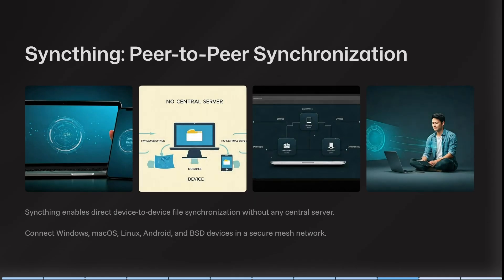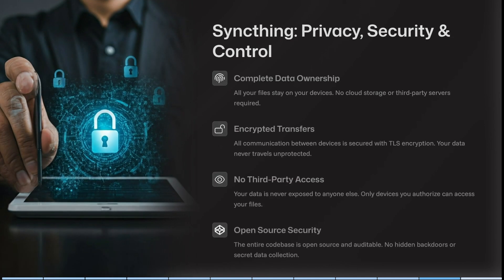SyncThing is a peer-to-peer synchronization platform that enables direct device-to-device file synchronization without any central server. It connects with Windows, Mac, Linux, Android, and BSD devices in a secure mesh network. You also have complete data ownership, so all of your files stay on your device — no cloud storage or third-party servers are required.